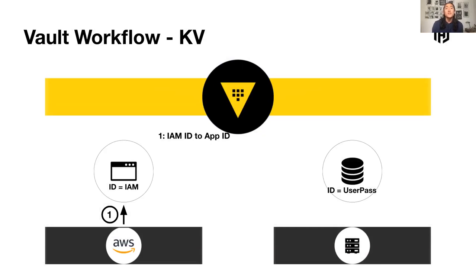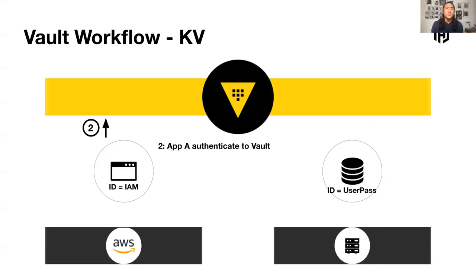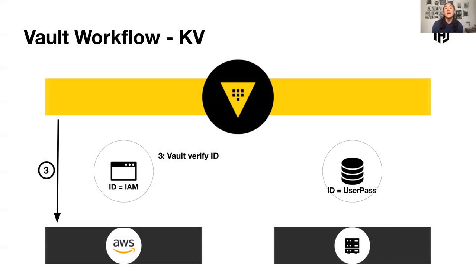The very first step in terms of proving out the identity is to actually receive that identity. In AWS, Identity and Access Management — or IAM for short — is generally the way folks get an identity for their systems. It comes for free, and it's very simple to create fine-grained roles and associated policies. Vault has an AWS auth method which allows you to present that IAM credential to Vault, and Vault then reaches back out to AWS to verify the identity.